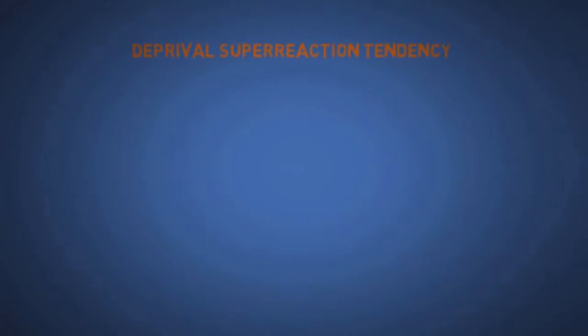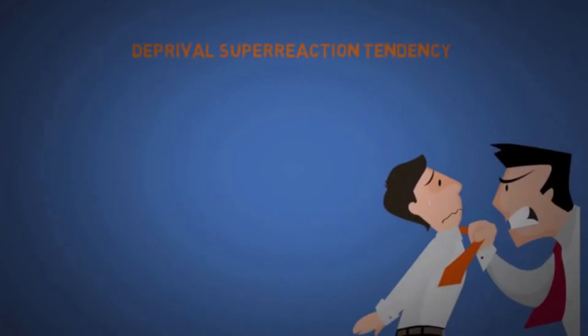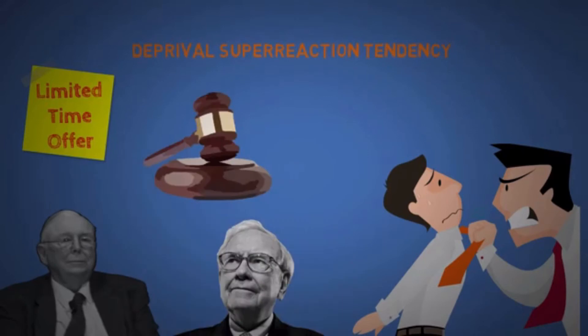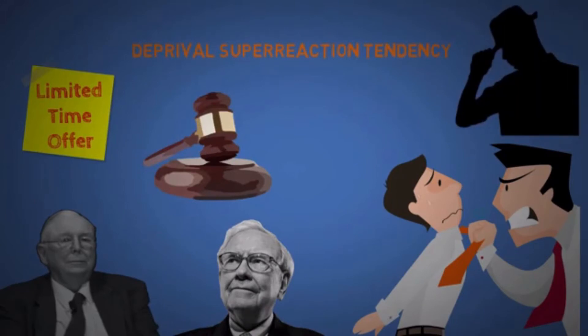The fourteenth is a deprival super-reaction tendency. People tend to act irrational with intensity even to small losses sometimes. This is why limited-time offers are powerful. Even Charlie Munger and Warren Buffett, two of the most successful people in this world, both hate being in auctions because they always feel like getting manipulated. Going once, going twice, sold to the man wearing the fedora hat.